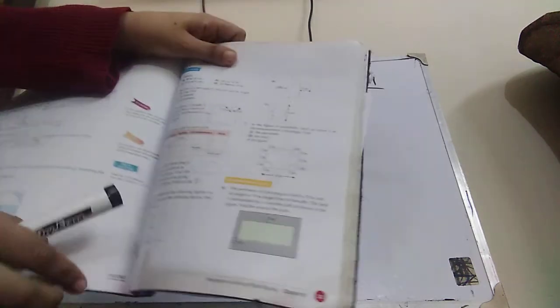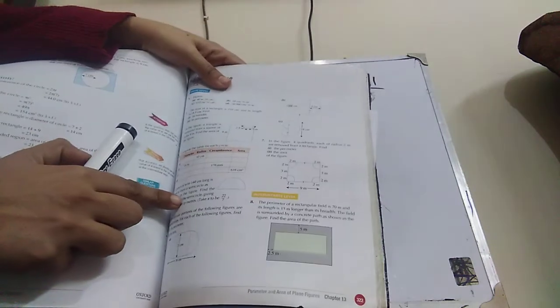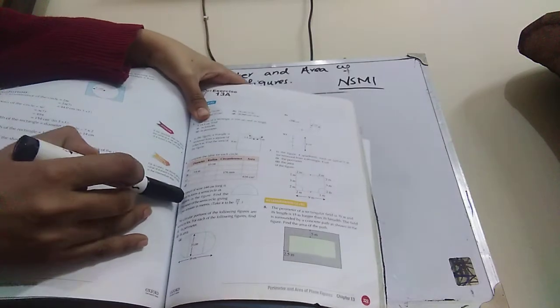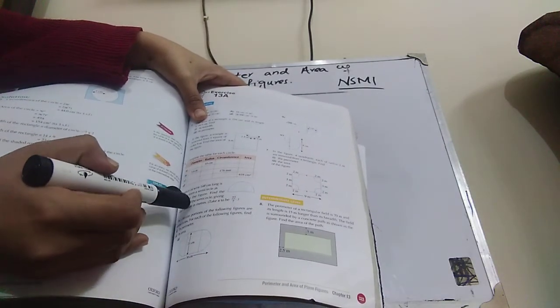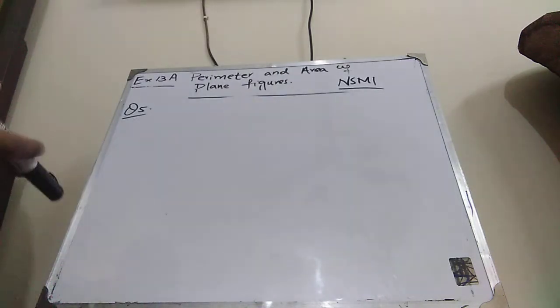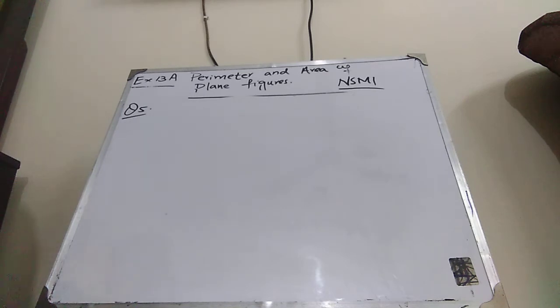Students, here you can see question number 5. So here, this is question number 5 and it is written that a piece of wire 144 cm long is bent to form a semicircle as shown in the figure. Find the diameter of the semicircle, giving your answer in meters. So students, first write down the information which is given.